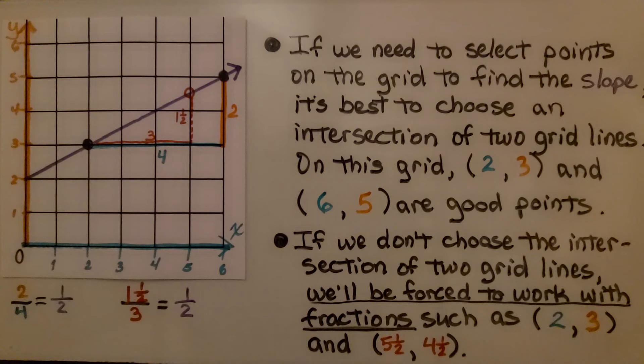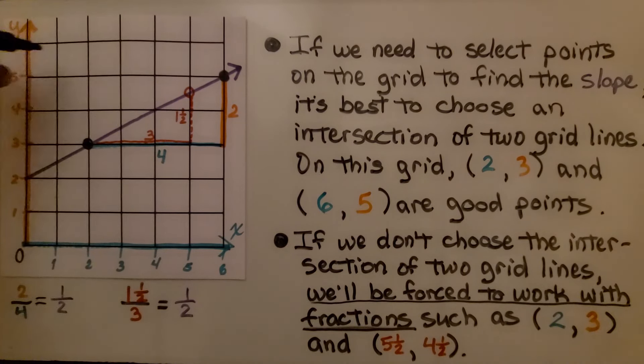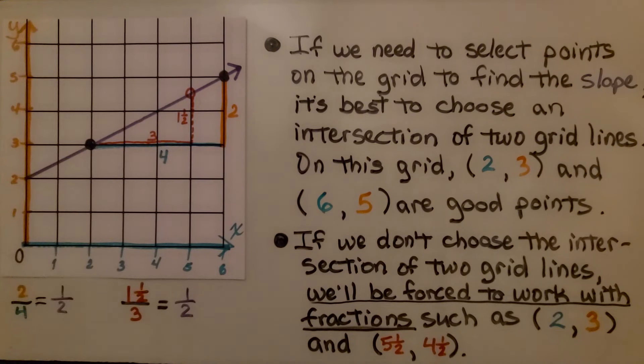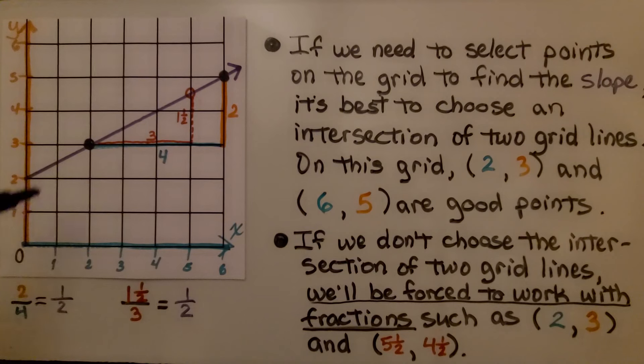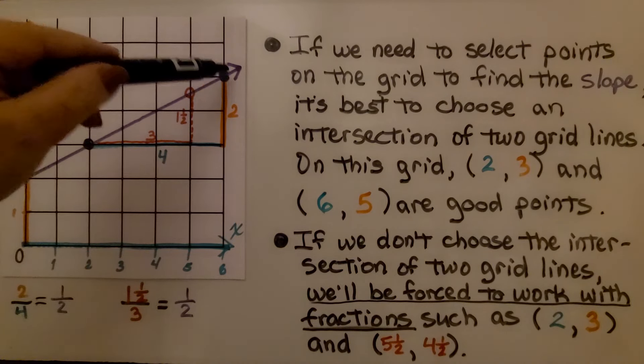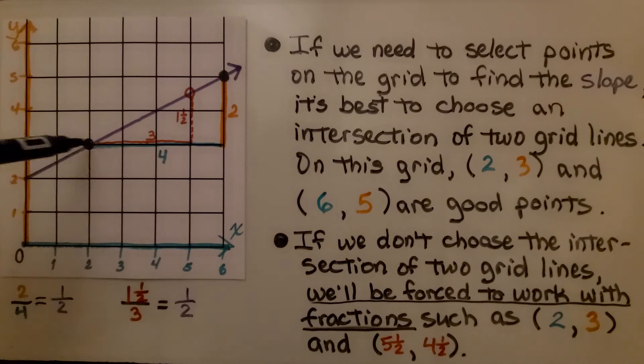If we need to select points on the grid to find the slope, it's best to choose an intersection of two grid lines. You want an intersection of two grid lines wherever they fall. On this grid, 2 for x and 3 for y and 6 for x and 5 for y are good points. These are on intersections of grid lines.